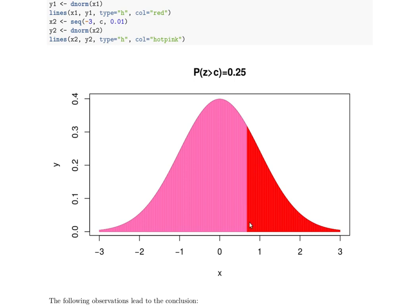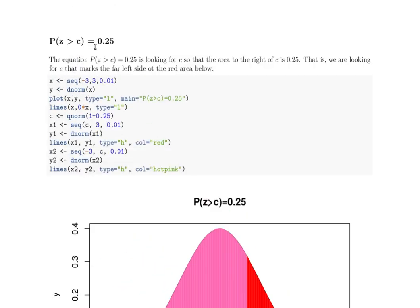If that's 25% of the total area, then this pink would have to be 75% of the total area. So we can convert this problem to a problem of finding the...